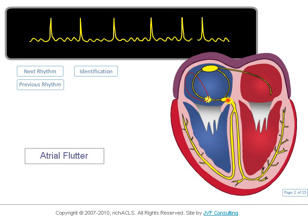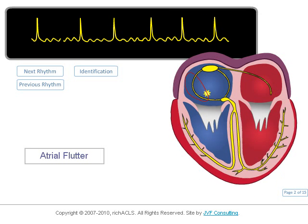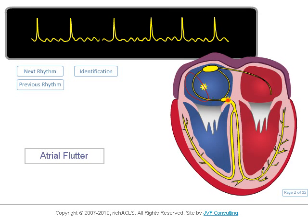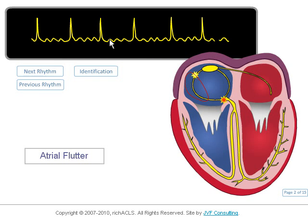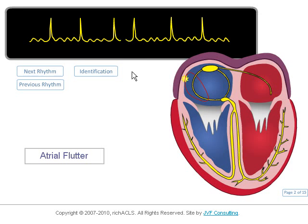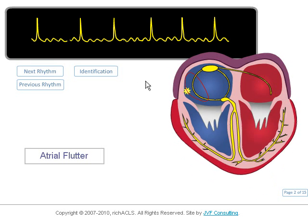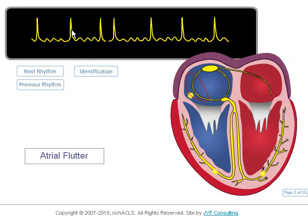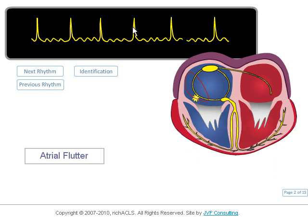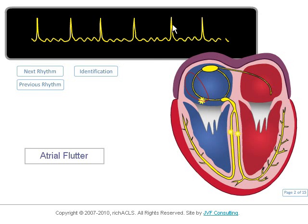This rhythm, atrial flutter, also has a unique waveform. We see what looks like many P waves, but they are actually F or flutter waves. The QRS is narrow. The R-to-R intervals are fairly regular but will vary.